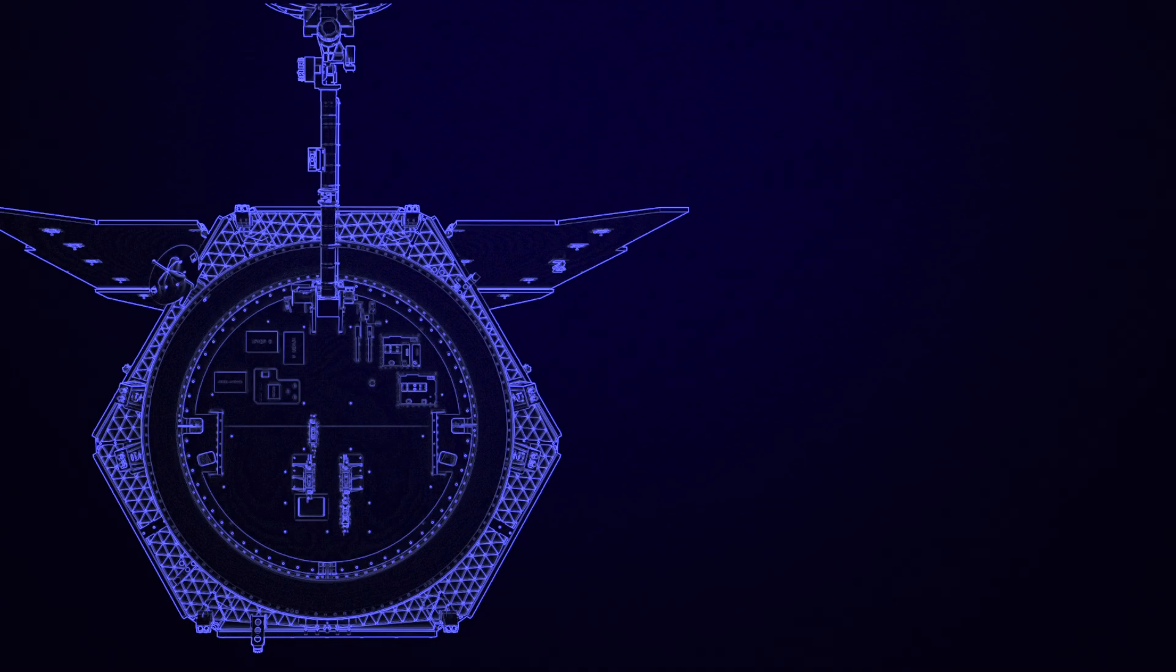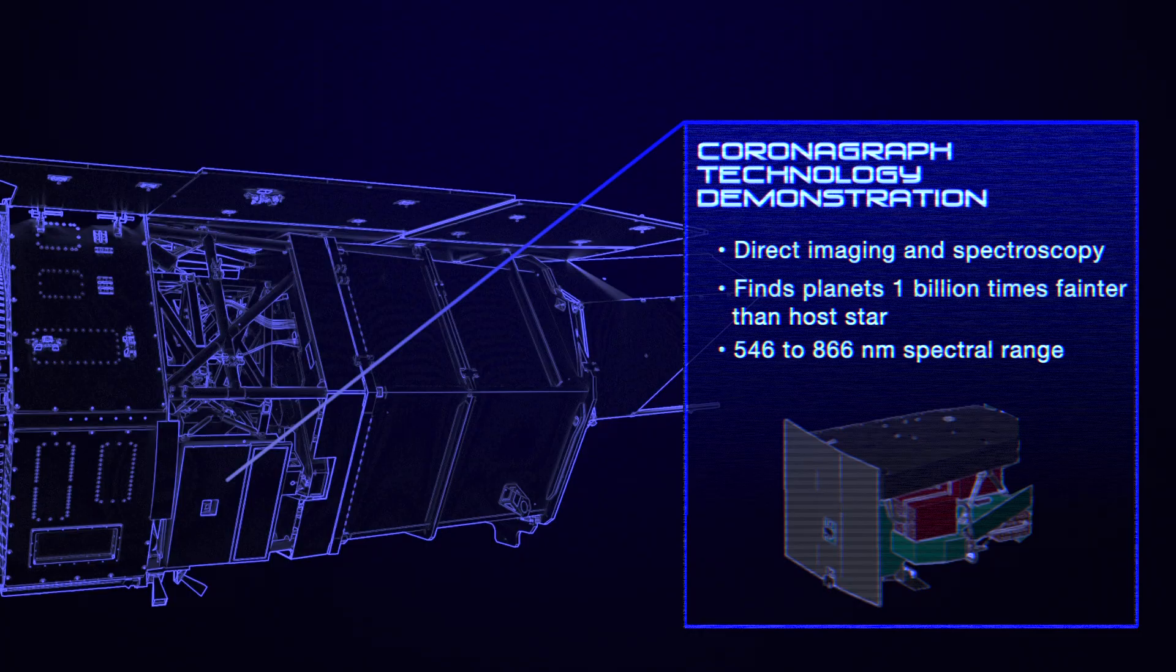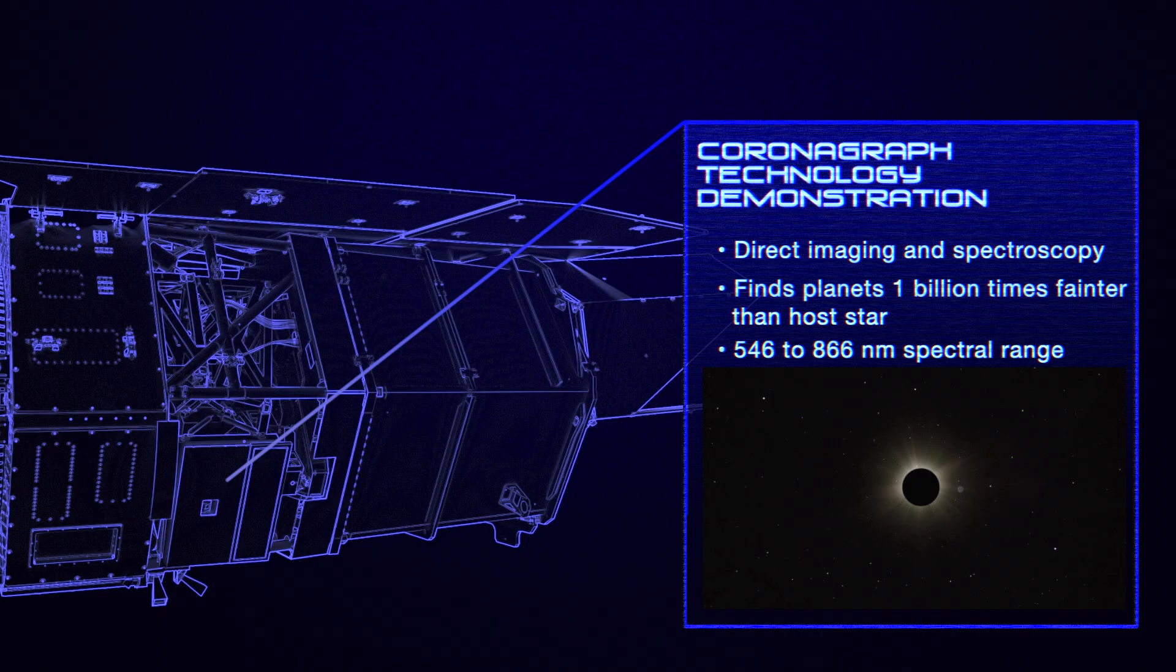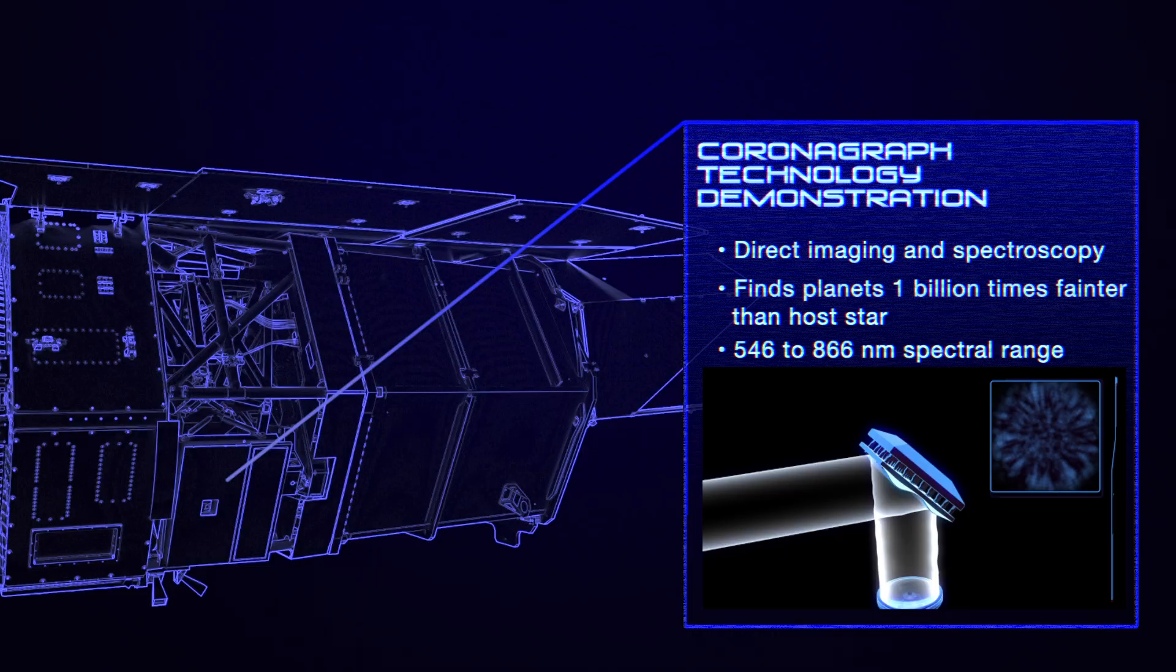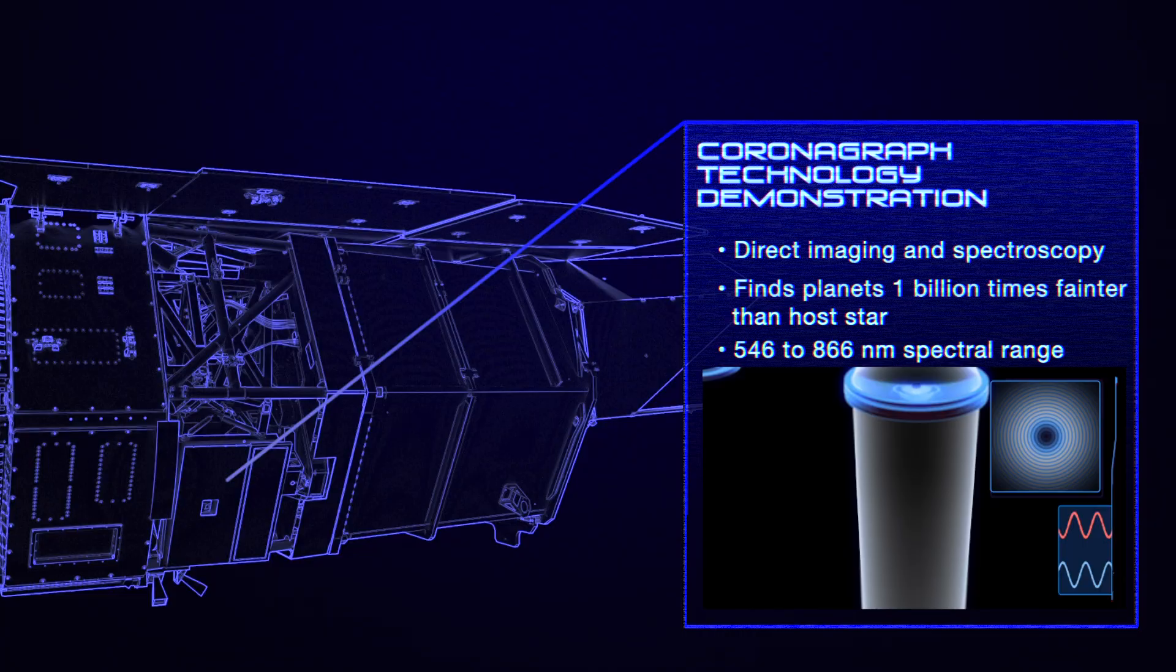Roman's other instrument is its coronagraph technology demonstration. A coronagraph blocks a star's light to capture the faint light from orbiting planets. It will be the first time a space telescope has used deformable mirrors to precisely control the incoming light, and special masks to block only the starlight.